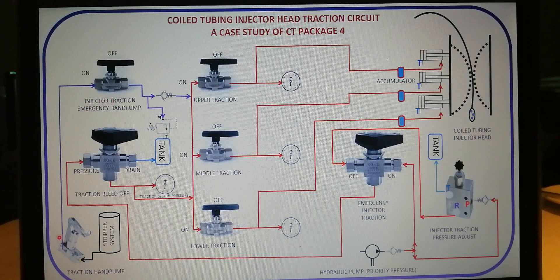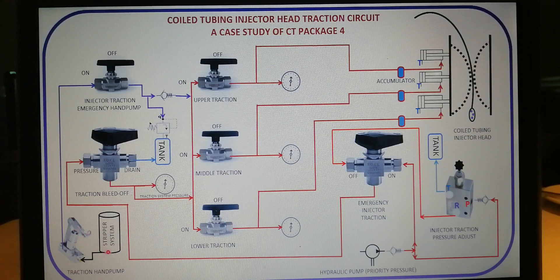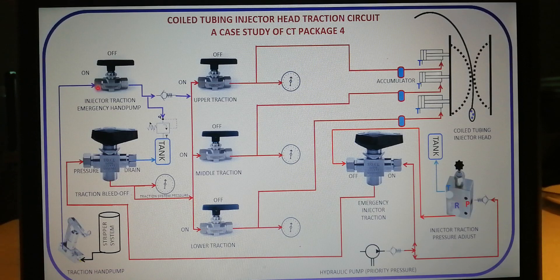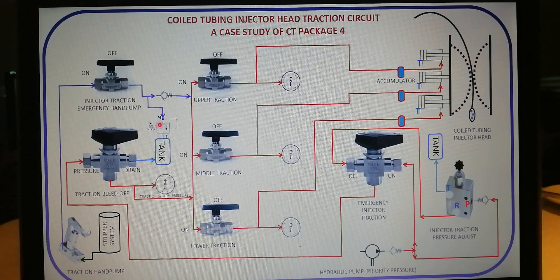This system gets hydraulic supply from the stripper system's circuit hydraulic reservoir mounted inside the control cabin. By the time you rock this pump up and down, hydraulic flows from this reservoir to the suction end of this manual hand pump, then comes out from this outlet and discharges to the injector emergency hand pump on and off two-way valve. On the line is a check valve that prevents flow back and also a pressure relief valve that helps to divert excess pressure above the 3,000 PSI overall system pressure back to the tank.